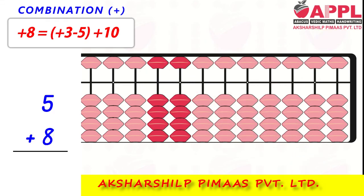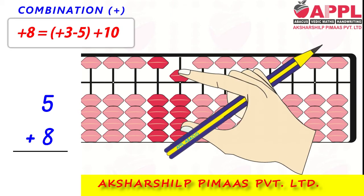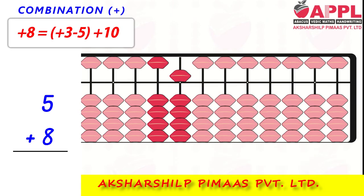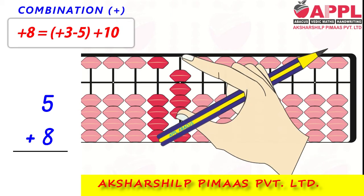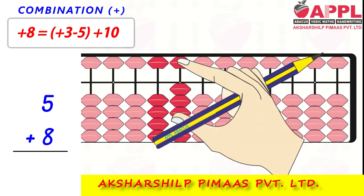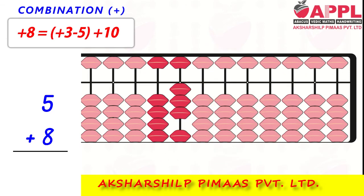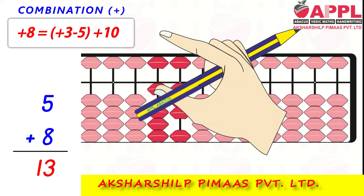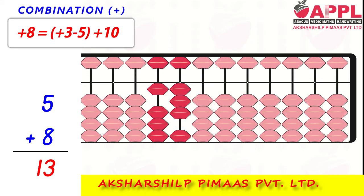Next: 5 add 8. For adding 8, add 3, less 5, add 10. That is 13. And back to me.